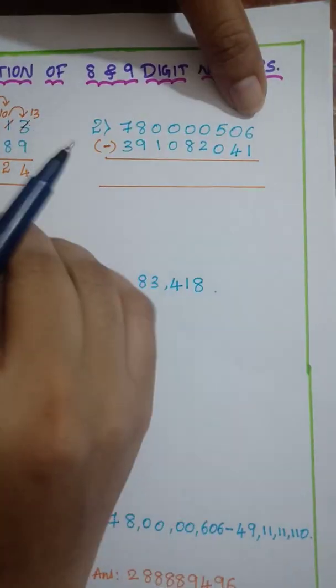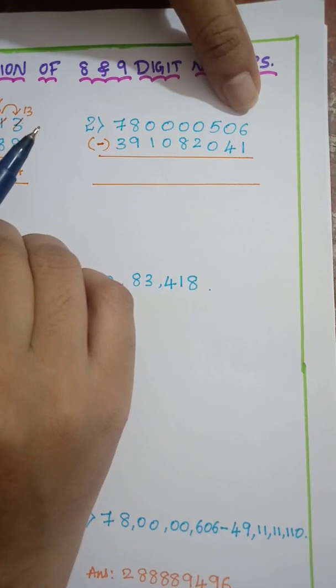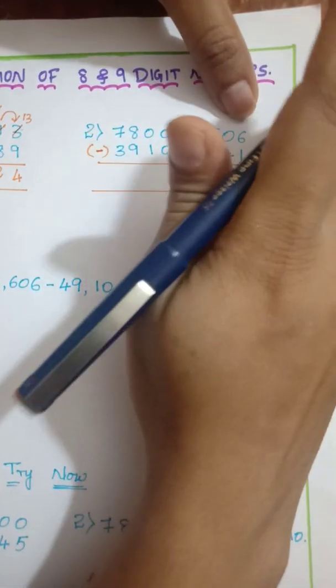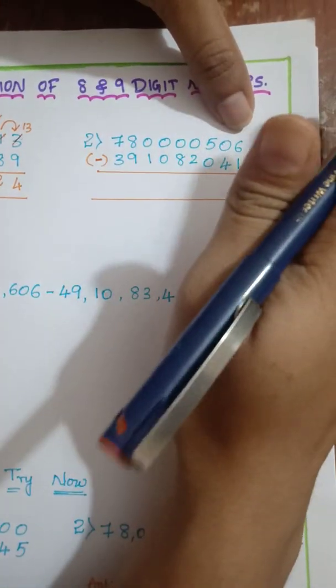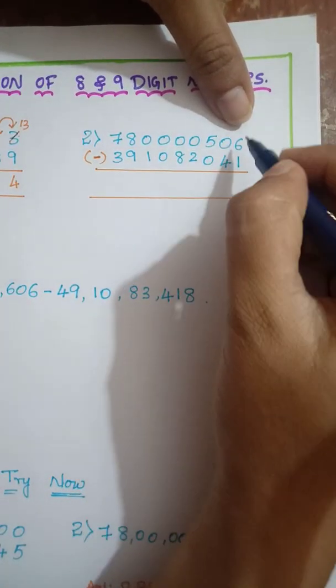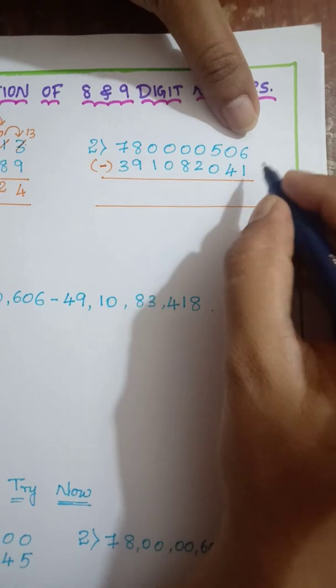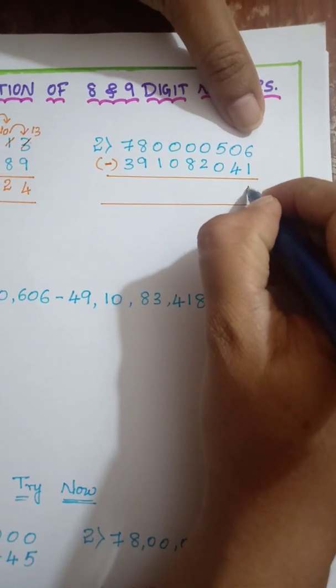Here, from this side we have to start. Please think for a while. We have to start from left, sorry, right hand side. So from our right hand side we have to start. So let's start. 6 minus 1 is how much? 5.